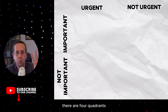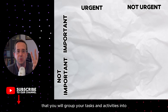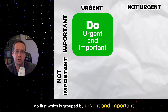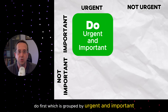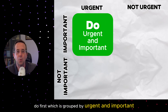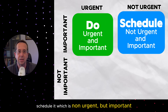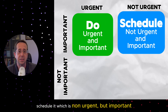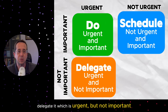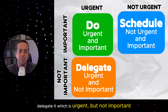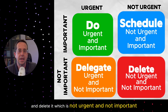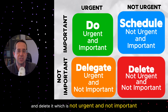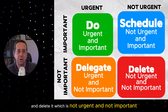There are four quadrants that you will group your tasks and activities into. Do first, which is grouped by urgent and important. Schedule it, which is not urgent but important. Delegate it, which is urgent but not important. And delete it, which is not urgent and not important.